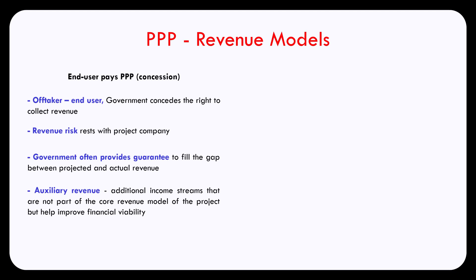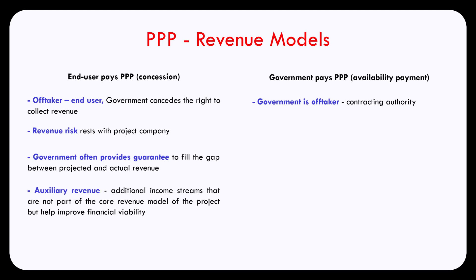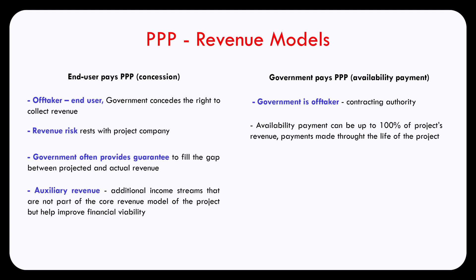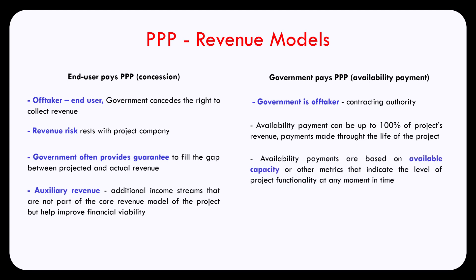In a government pays model, the government is the off-taker. The government makes an availability payment to the project company, and these payments are made throughout the life of the contract. Those availability payments will be based on some type of metrics. For example, in the case of a power plant, the payment would be based on the available capacity of the plant, measured in megawatts. If we're talking about other projects, such as a hospital, the payments would be based on other metrics that indicate the level of project functionality during a specific period of time.